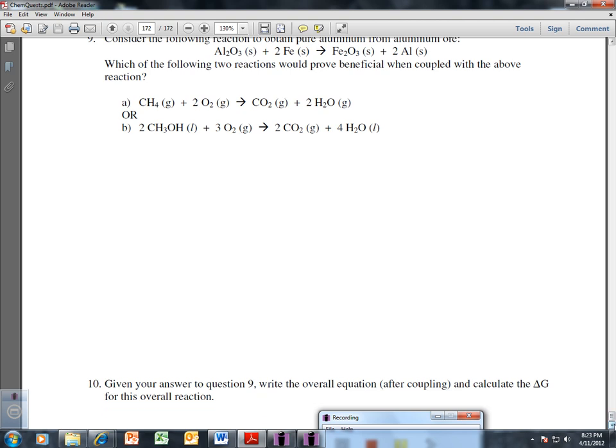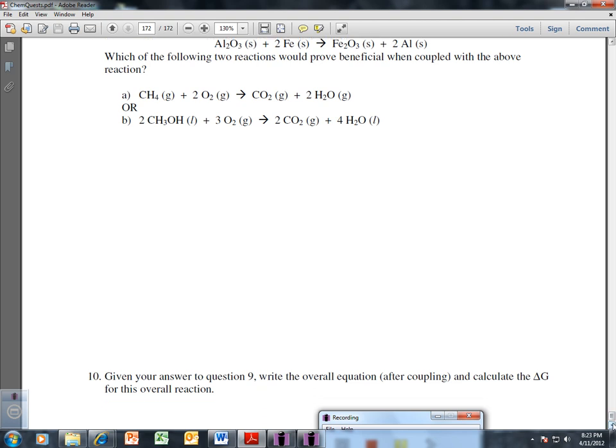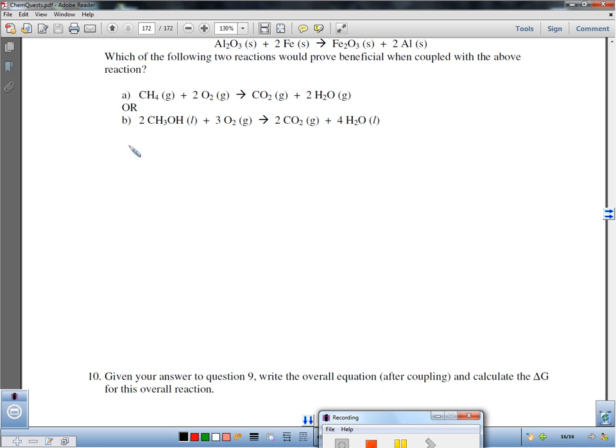Alright, number 9. I want to move this down a little bit. So, first of all, for number 9, I need to calculate delta G for the first reaction, this reaction up here. Calculate delta G. If I calculate delta G for this reaction, delta G for that reaction, without putting all the values in there, delta G equals 838 kilojoules for that reaction up here, which means it is not spontaneous. It doesn't just happen.